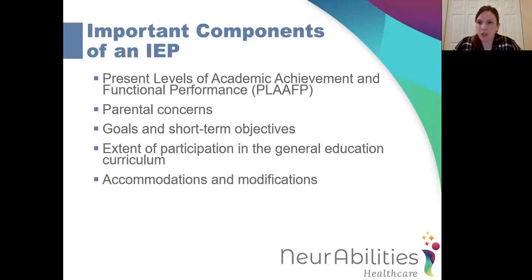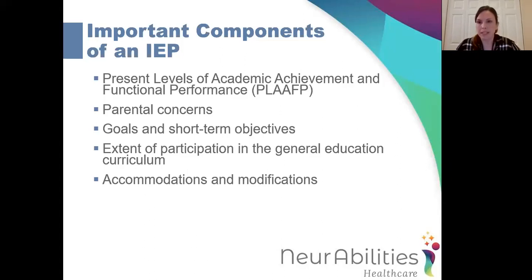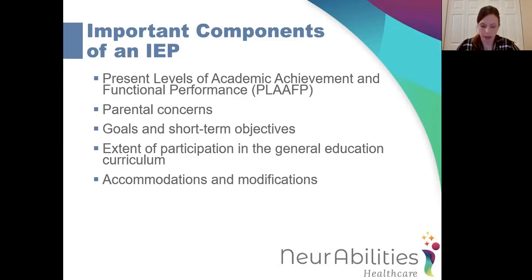Also important in the IEP are accommodations and modifications, which should be specific to your child. These are the tools used to adapt the curriculum to allow your child to be successful. Accommodations are anything that helps the student learn — examples include adaptive writing utensils, movement breaks or rest breaks throughout the day, preferential seating, use of visual schedules, and as they get older, extended time to complete assignments. Modifications cover changes to what the child is expected to learn — these come into play more as your child gets older and include options like pass/no pass rather than graded assignments, modifying the length of assignments, typing versus handwriting, or rewording questions in simpler language.